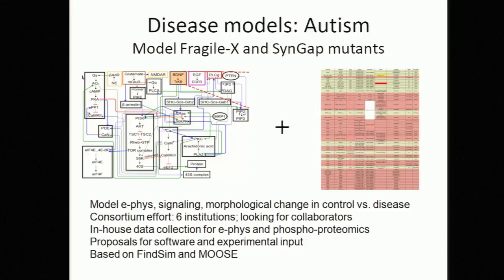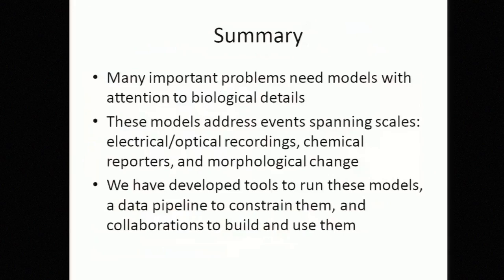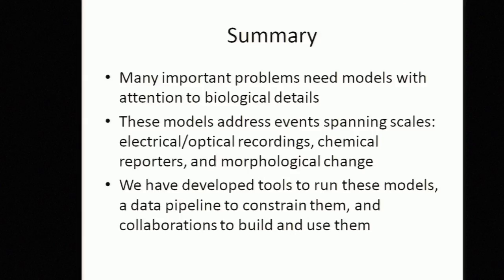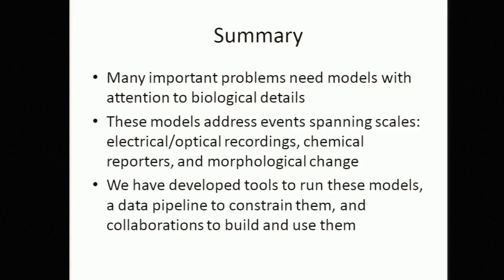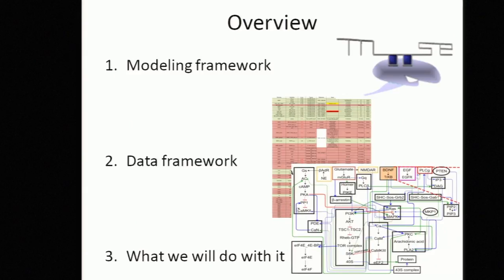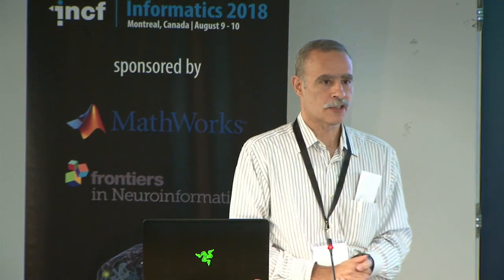To summarize: there are very many important problems in neuroscience which require models that pay a lot of attention to biological detail, and these typically span many scales — electrical and optical — with data from interesting new recording techniques, chemical reporters, and morphological change. We've developed tools to run, parameterize, and analyze these, and we're hoping to build up collaborations to work on them. This was the framework for modeling, for data handling and analysis, and what we're planning to do with it. Thank you.